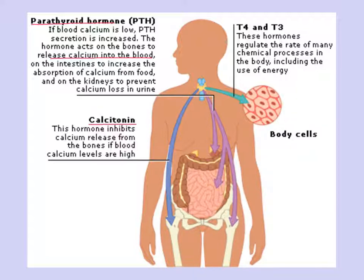T3 and T4 are involved in overall metabolism — the rate of many chemical reactions in the body, breaking down nutrients for energy, producing ATP, maintaining body temperature and heart rate. Your basal metabolic rate — the speed of your own metabolism — is determined by your levels of these two thyroid hormones.